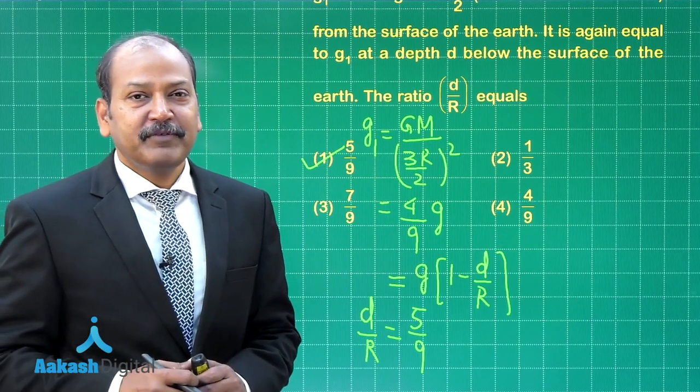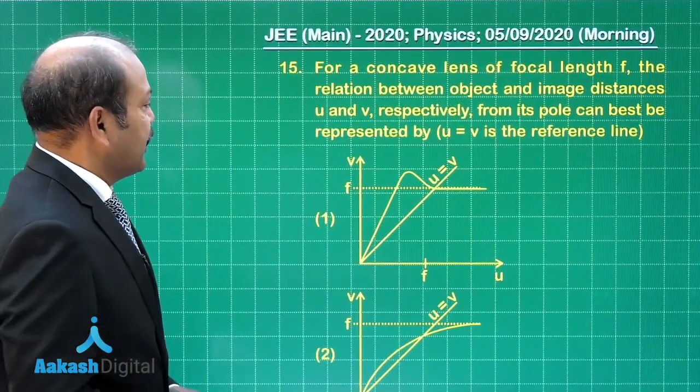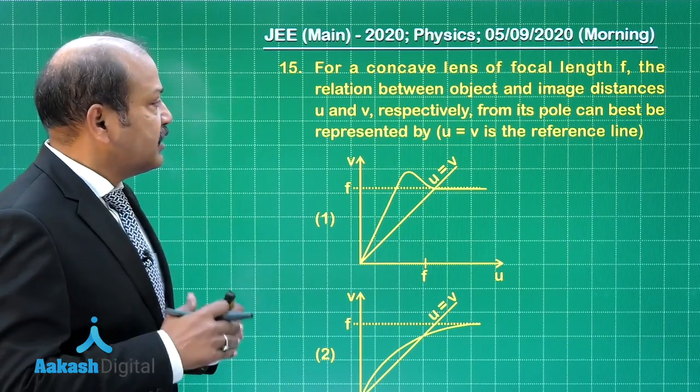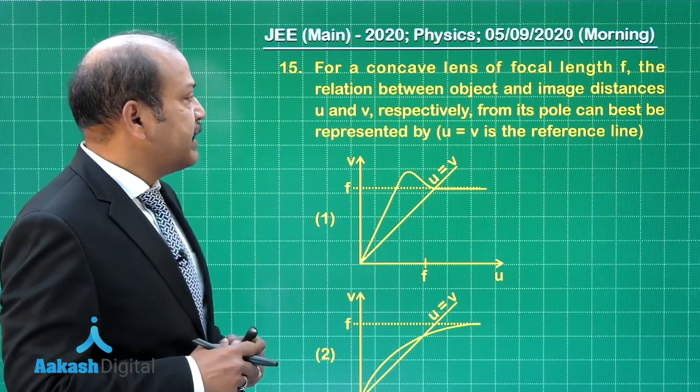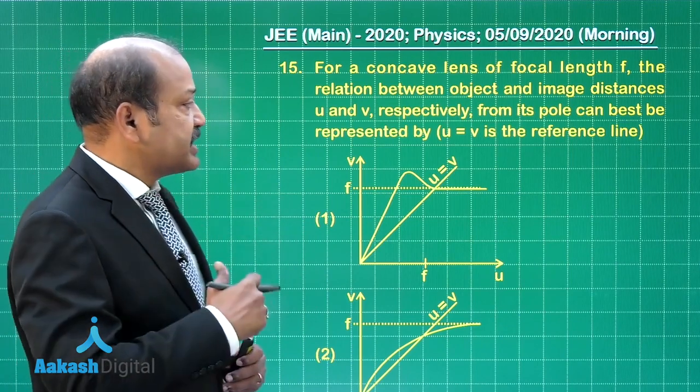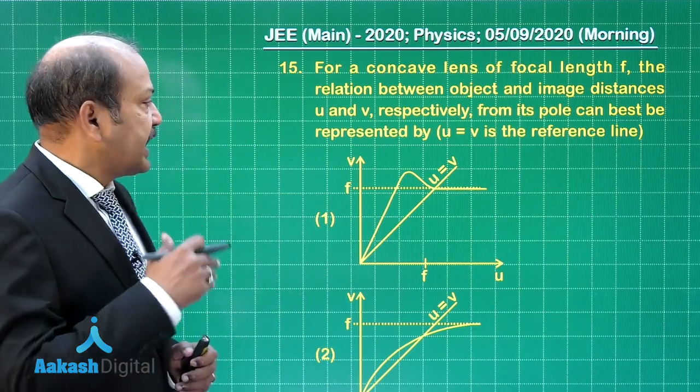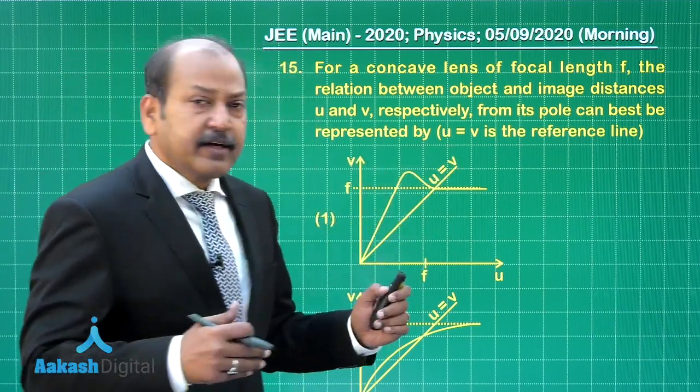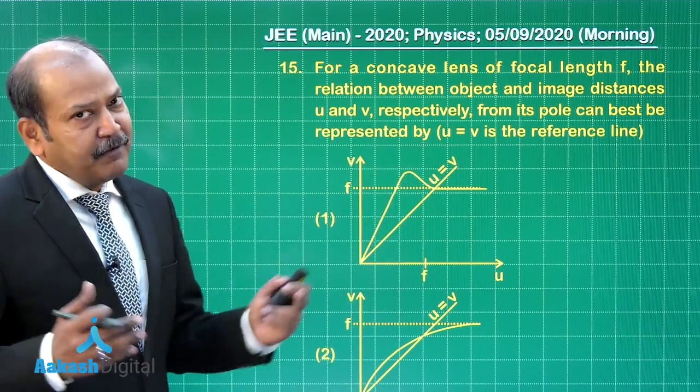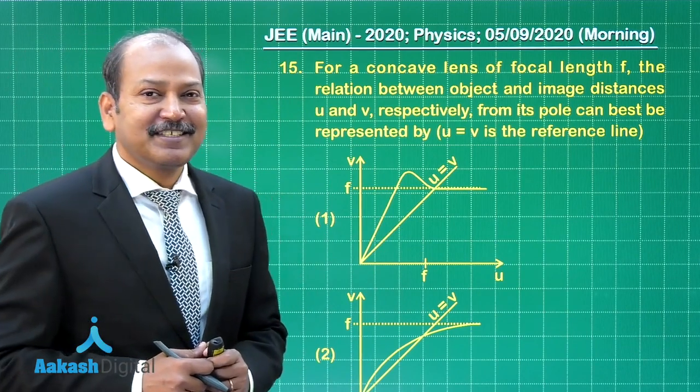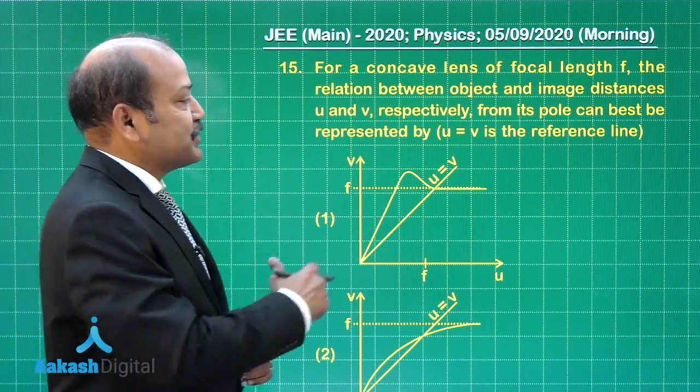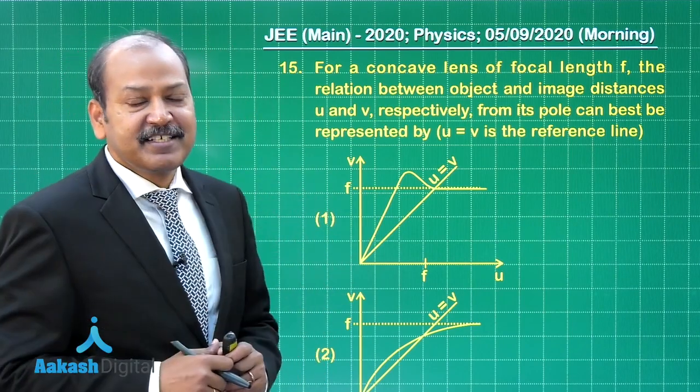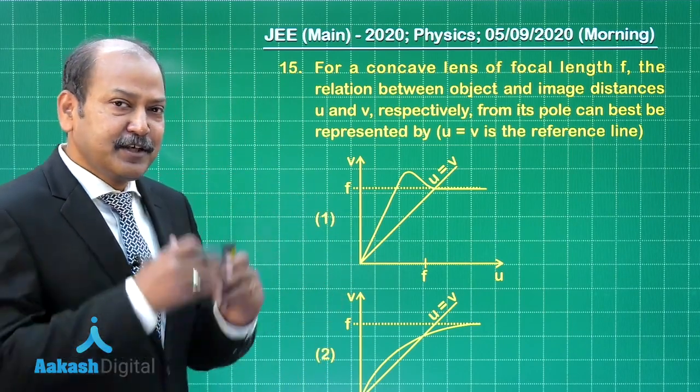Question number 15 says for a concave lens of focal length f, the relation between object and image distances u and v respectively from its pole can best be represented by... and it is given that u equal to v is the reference line. The topic is ray optics and it's about concave lens, the relation between the object distance and the image distance from the lens.